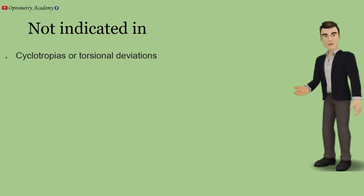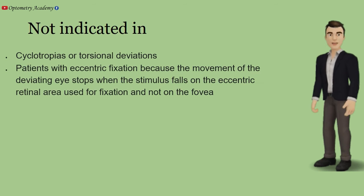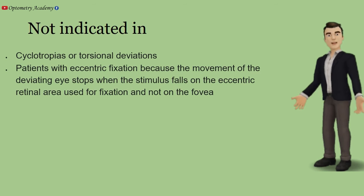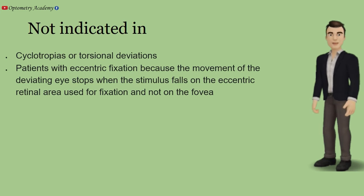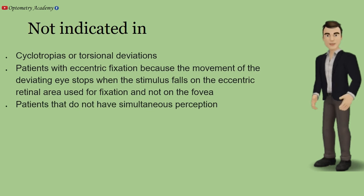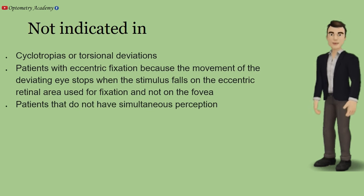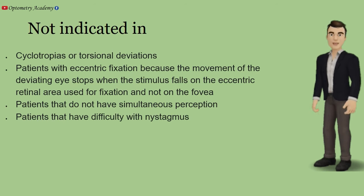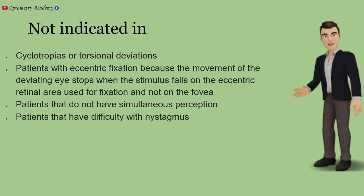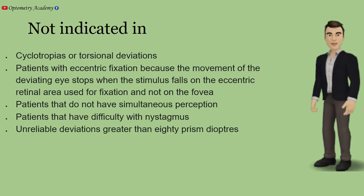The PBCT is not indicated in cyclotropia or torsional deviations, patients with eccentric fixation — because the movement of the deviating eye stops when the stimulus falls on the eccentric retinal area used for fixation rather than on the fovea — patients who do not have simultaneous perception, patients who have difficulty with nystagmus, or in unreliable deviations greater than 80 prism diopters.